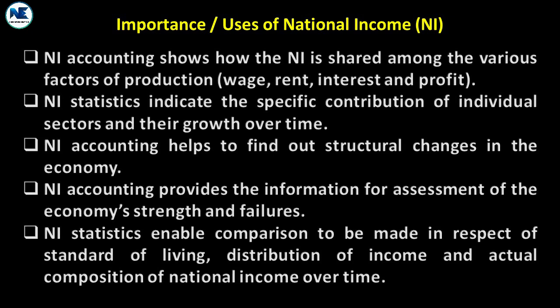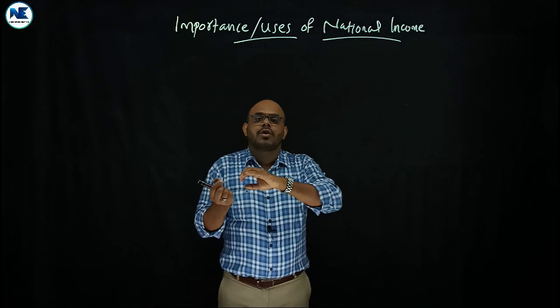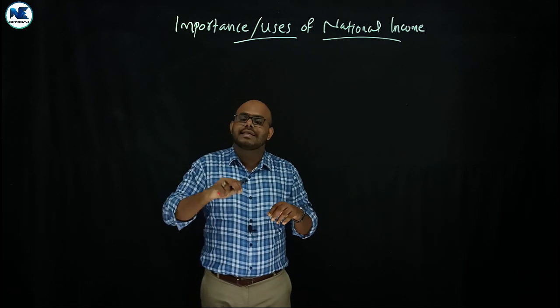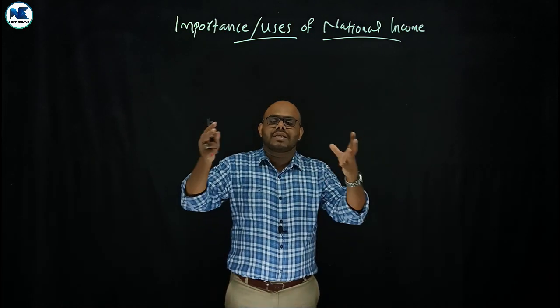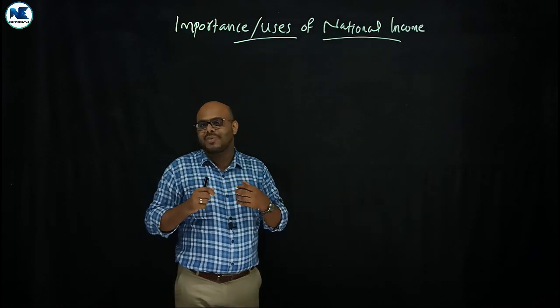Third point: national income accounting helps to find out structural changes in the economy — that is, the shift from agriculture to industry, and from industry to the service sector. Fourth point: national income accounting provides information for assessment of the economy's strengths and failures. Fifth point: national income statistics enable comparison of standard of living, distribution of income, and the composition of national income over time — that is, the contribution from agriculture, industry, and the service sector.